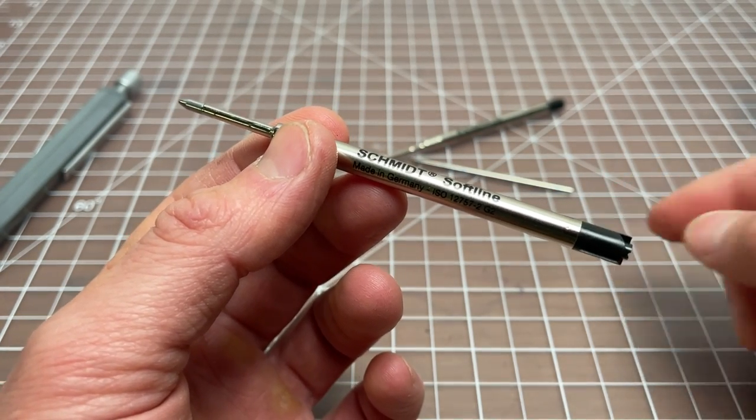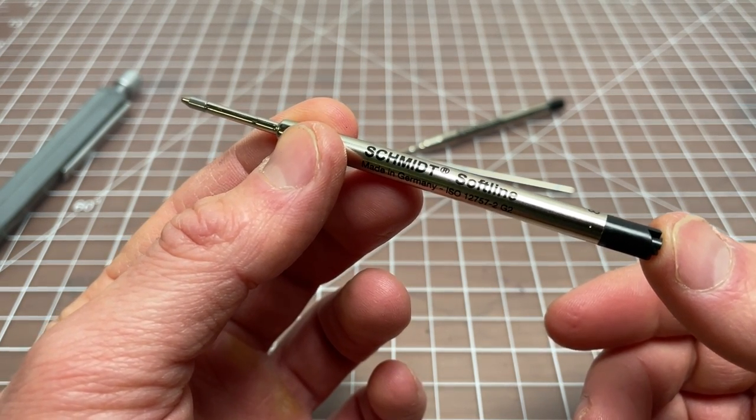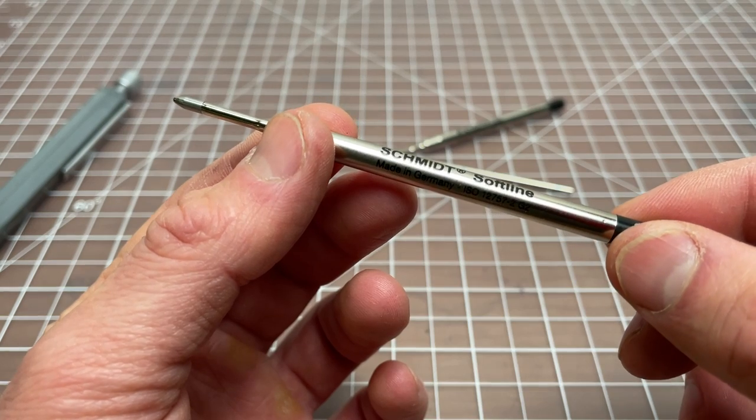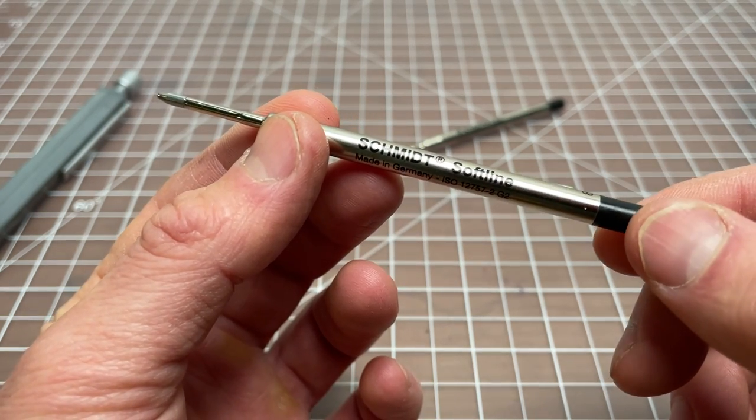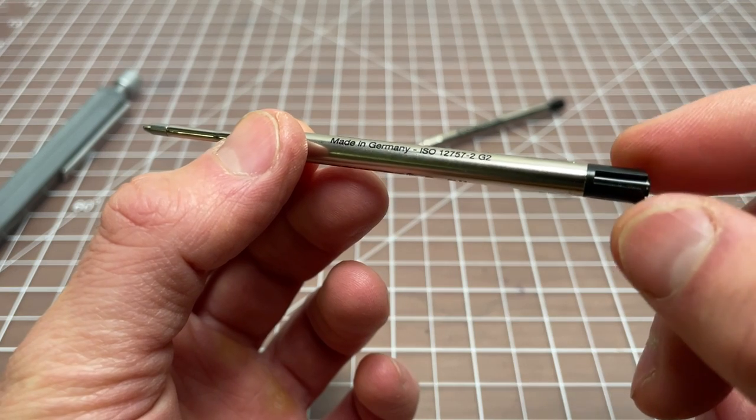I'll be using the EasyFlow 6000 as a stand-in. It's the same refill, just a different size, same ink. Schmidt also makes the P900, which is a standard ballpoint refill. It looks like this and uses relatively standard ballpoint ink.